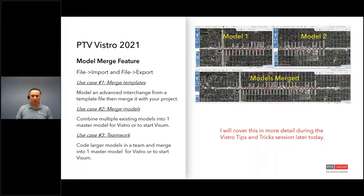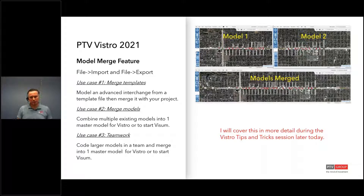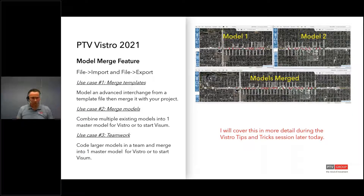Next, we have a model merge feature. What it does is allow you to minimize rework and make your modeling experience more efficient. You can reuse existing models — maybe you have a model in one area and need to combine two models together for a corridor. Or if you have template files of advanced interchanges, you're able to take these templates and bring them into the Vistro model. This is a really big feature for us.